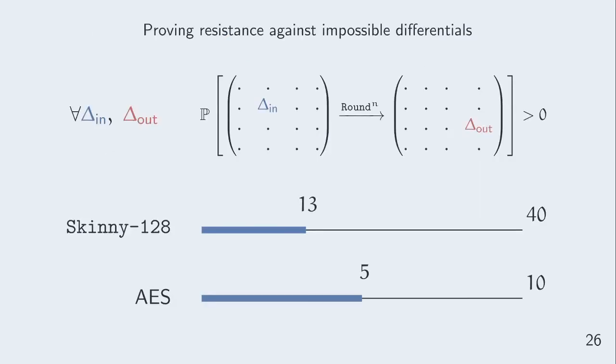Finally, we showcased our techniques by computationally proving partial resistance against impossible differentials for 13 rounds of Skinny-128 and five rounds of AES. More precisely, we checked that there exists at least one path between any input and output difference with one active byte. Those computations are based on exhaustive search, but to speed up this search, we use the natural extension of the differential possibility equivalence technique by Sasaki and Todo.